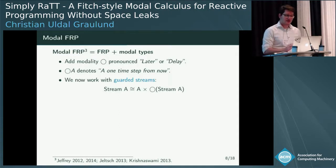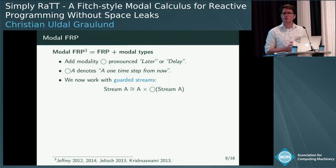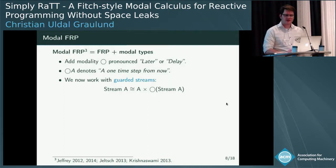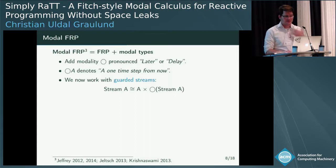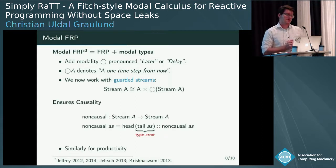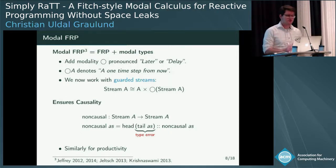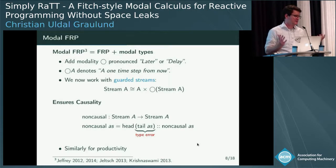With modal FRP, we work with guarded streams where the unfolding is guarded by the modality, making timing explicit in the type — you can really see the unfolding takes time because it appears right in the tail. This immediately gives us causality: the non-causal function from before simply doesn't type-check anymore, because we'd be calling head on a delayed stream. The tail is delayed, so we can't call head on it — it's not there yet. We also get productivity.